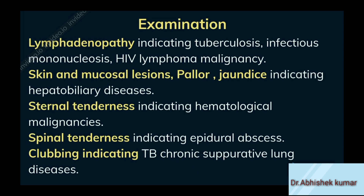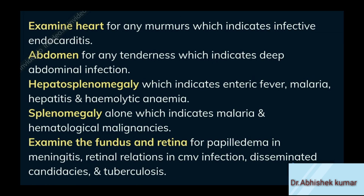Examine for lymphadenopathy indicating tuberculosis, infectious mononucleosis, HIV, lymphoma, malignancy. Examine for skin and mucosal lesions, pallor, jaundice indicating hepatobiliary diseases. Examine for sternal tenderness indicating hematological malignancies. Examine for spinal tenderness indicating epidural abscess. Examine for clubbing indicating TB and chronic suppurative lung diseases. Examine heart for any murmurs which indicates infective endocarditis. Examine abdomen for any tenderness indicating deep abdominal infection. Examine for hepatosplenomegaly indicating enteric fever, malaria, hepatitis and hemolytic anemia. Examine for splenomegaly alone indicating malaria and hematological malignancies. Examine the fundus and retina for papilledema in meningitis, retinal lesions in CMV infection, disseminated candidiasis and tuberculosis.